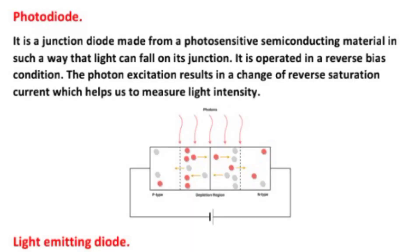Photodiode. What is a photodiode? It is a junction diode made from a photosensitive conducting material in such a way that light can fall on its junction. It is operated in a reverse bias condition. The photon excitation results in a change of reverse saturation current which helps us to measure high light intensity.